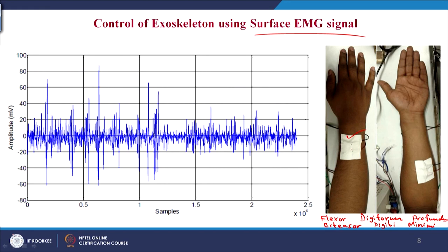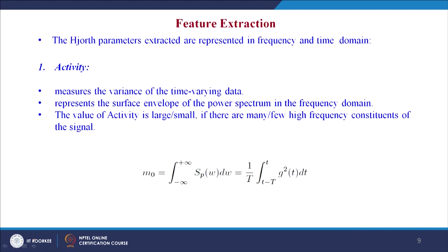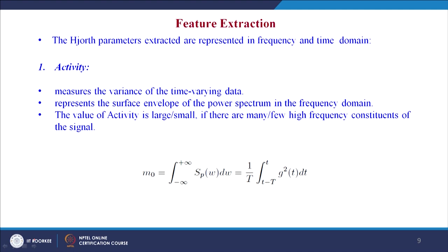The schematic shows the signal collected in one window — for 5 seconds we collected the window of the signal corresponding to the finger motion. Corresponding to extension and flexion of the index finger, we have taken the signal, which is shown here schematically. Coming to the feature extraction.